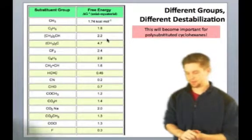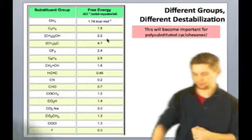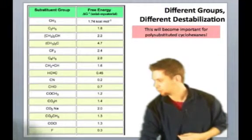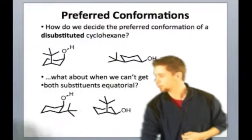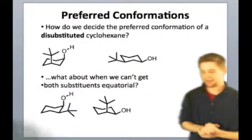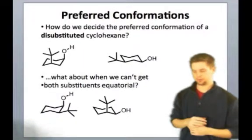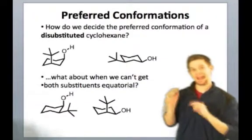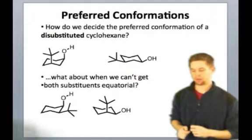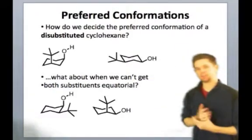So a question you might be thinking about is, of course, we've identified that for monosubstituted cyclohexanes, the axial conformer is less stable than the equatorial conformer. But you may be wondering, what happens if we have a disubstituted cyclohexane going on? Well, in the disubstituted case, we have the interesting problem that one of the substituents may have to be axial at all times. So in the top example here, I've got the case that's pretty simple to solve.